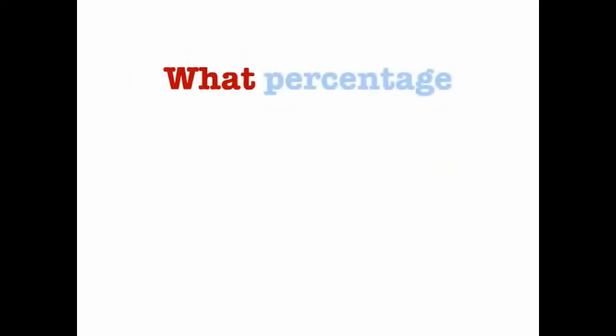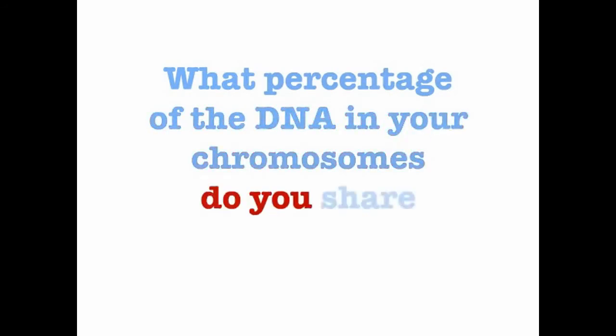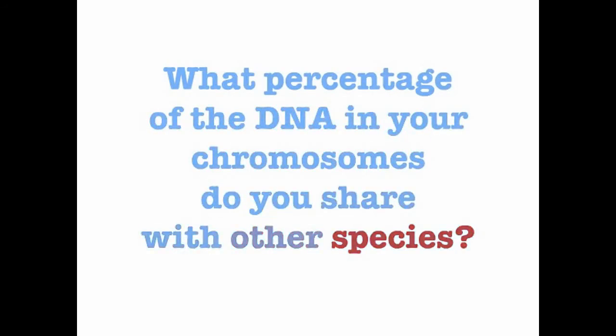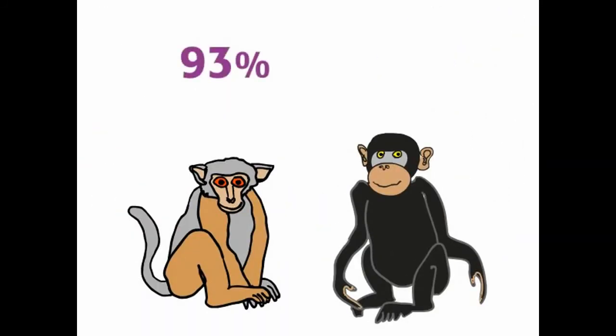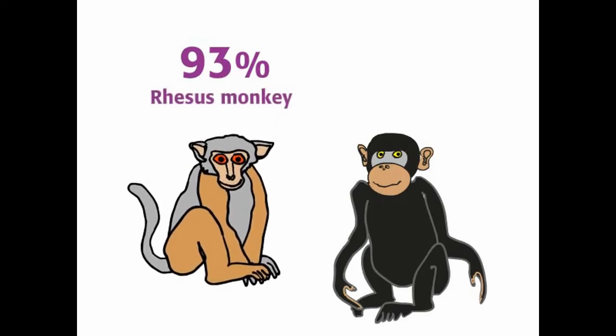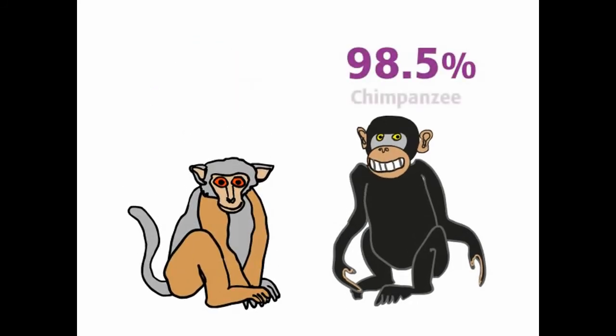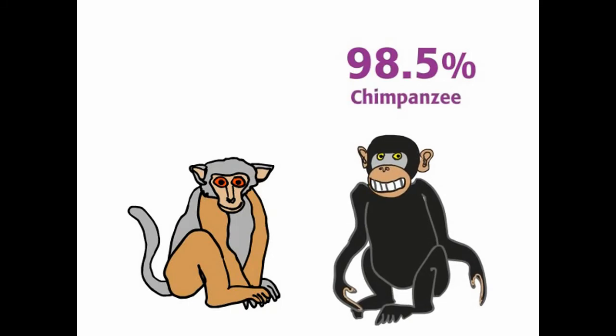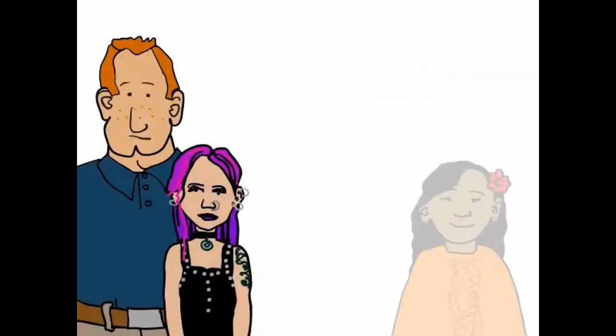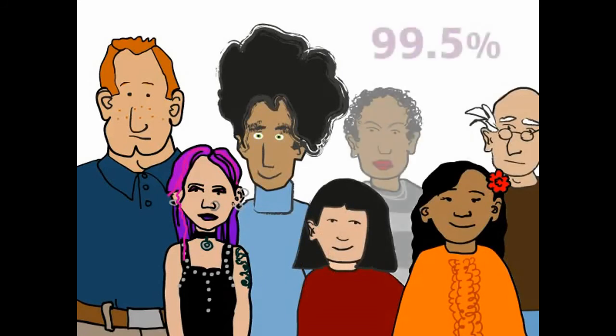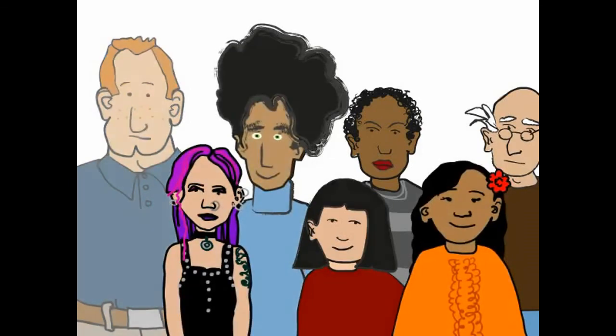So, what percentage of the DNA in your chromosomes do you share with other species? You share 93% of your DNA with the rhesus monkey and 98.5% with our friend chimpanzee. How about with other humans? 99.5%. So, what makes us different from one another?